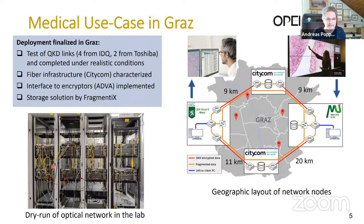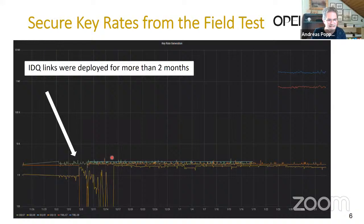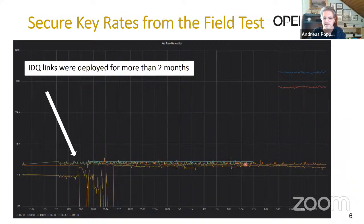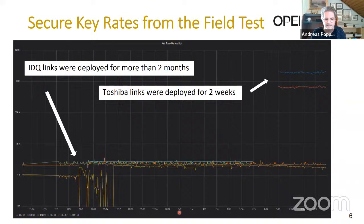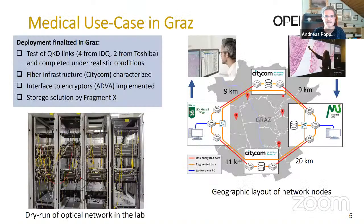We first demonstrated in the lab — this is a picture of the dry run of the optical network — and we wanted to go fast out to the deployment. In the first two weeks we really had some problems with some devices, then we could solve them over three to four weeks. The four ID Quantique devices were running nicely in the field over the new year. Brexit happened and the devices coming from the UK had a little bit of delay and were only a short time in our network. Thank you.